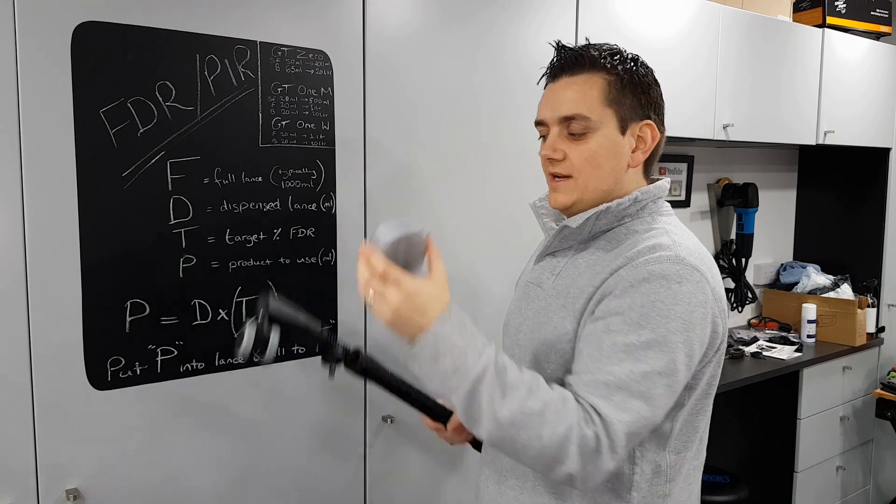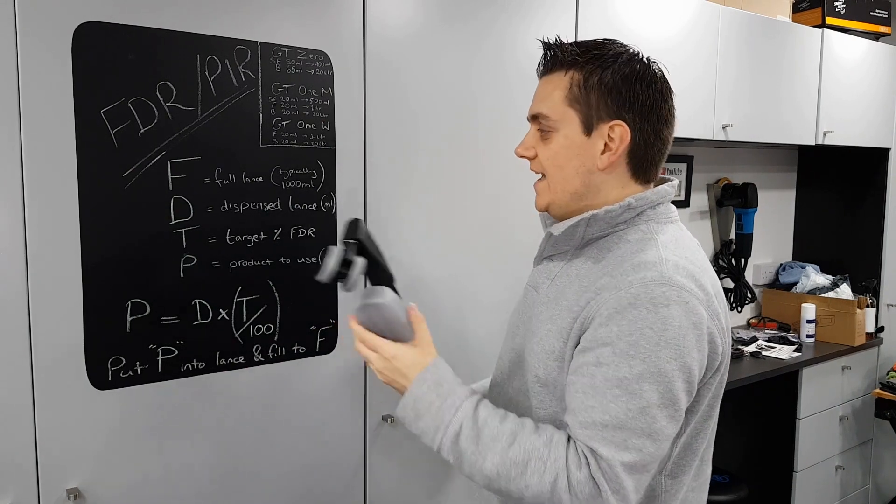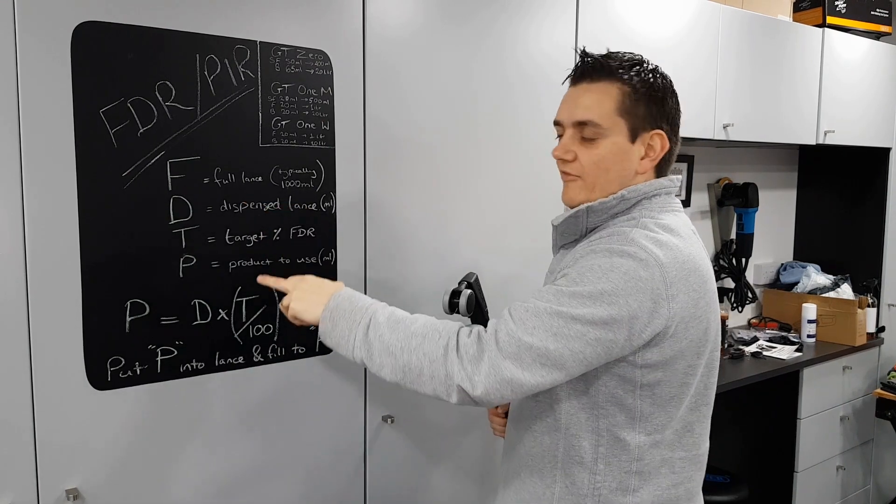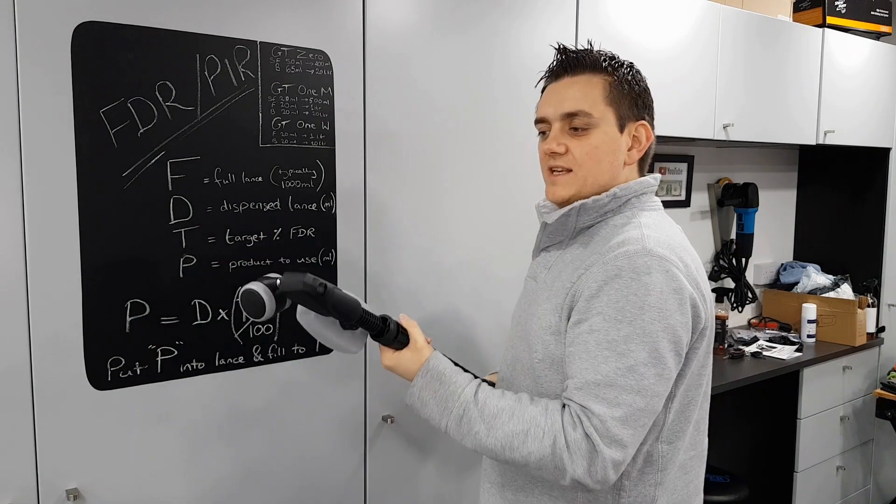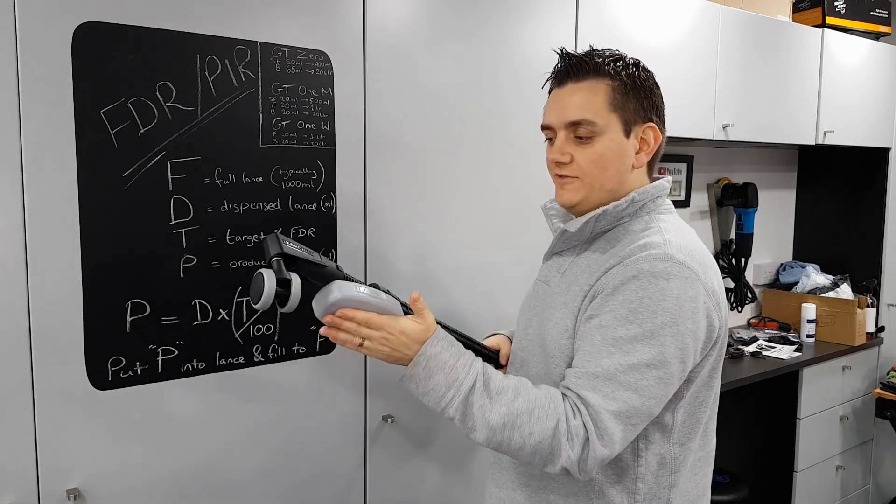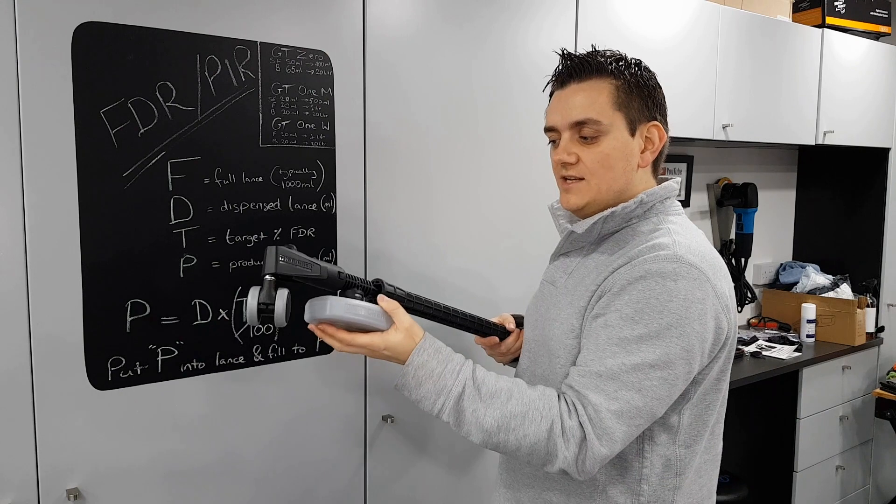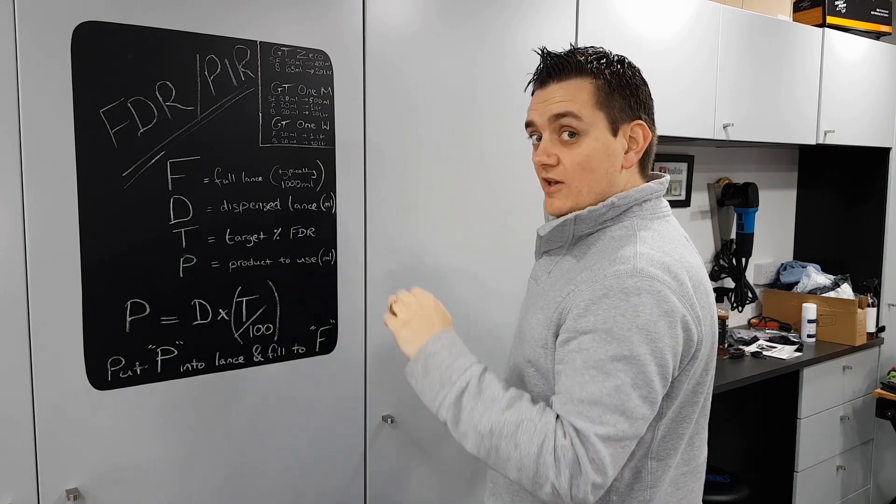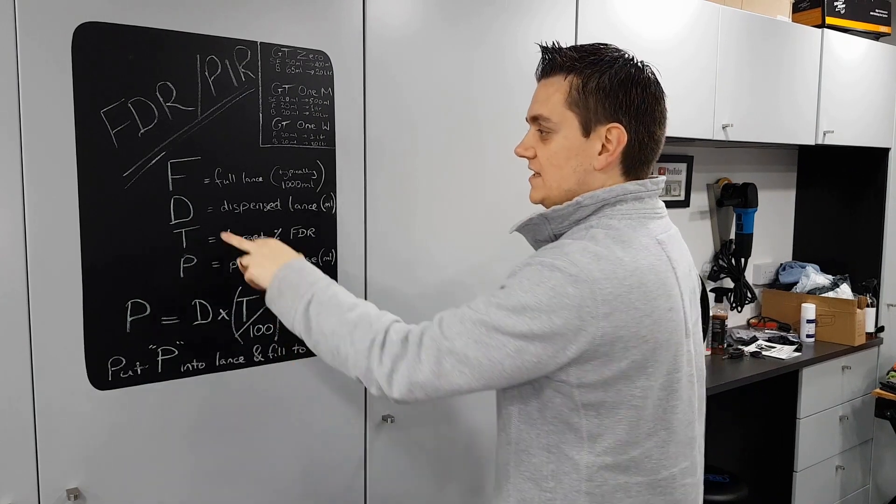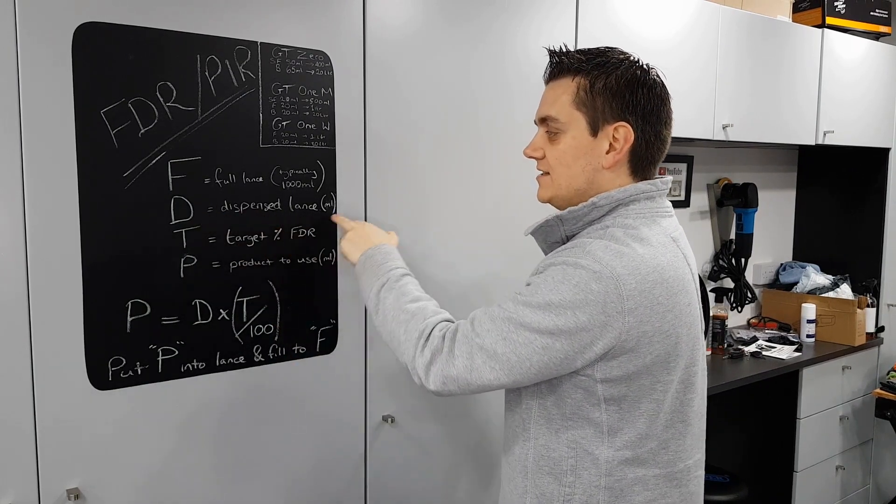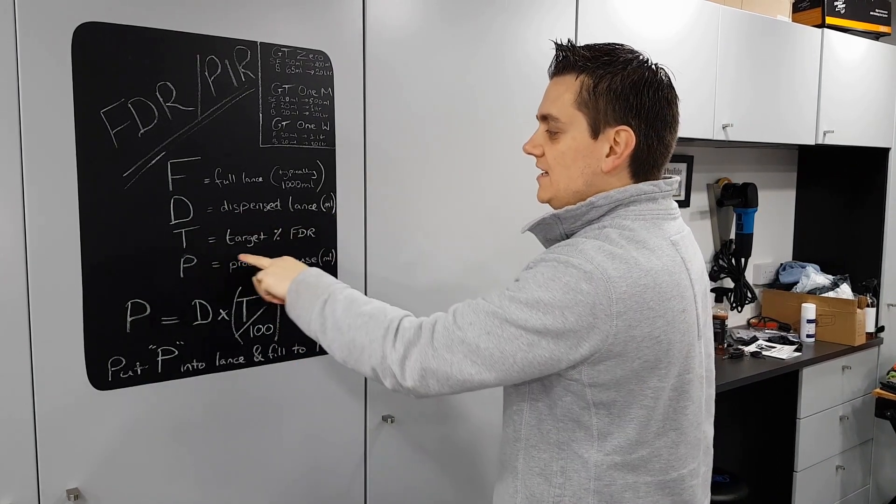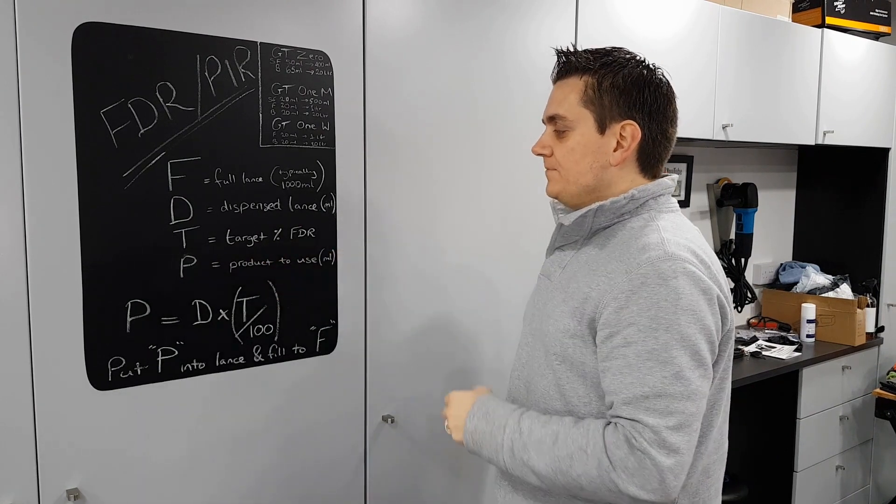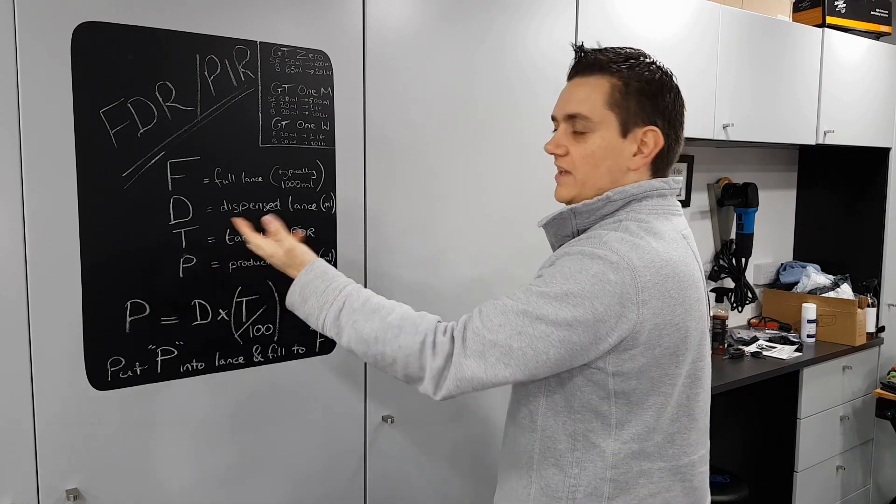So what we're going to do is fill the lance up with water, a thousand mil or however much this lance takes. You'll be typically doing this for your snow foam lance, but I'm going to, it's the same process. So I'm going to fill that up with water, measure how much that is, so that is my F. I'm then going to dispense this using the jet wash, so that's full of water. I'm going to dispense this into a bucket until this is empty, then measure the amount of water in the bucket. That is D, your dispensed lance also in milliliters.